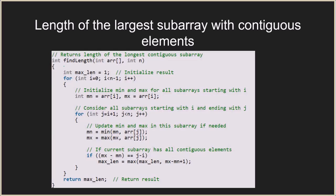The main method is findLength, which takes the array and its size as arguments and returns an integer. We initialize the maximum length as 1, then run an outer loop from i equal to 0 to n minus 1. In each iteration, we initialize the minimum and maximum as array[i], which is the first element for that iteration. We then consider all subarrays starting at index i, with j varying in the inner loop.